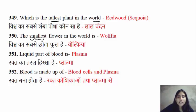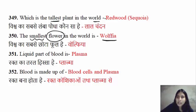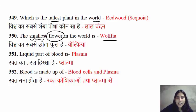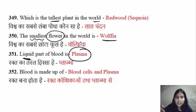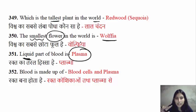The smallest flower in the world is Wolffia. Rafflesia is the biggest flower. The liquid part of blood is called plasma. Blood is made of plasma, and with plasma, blood also contains red blood cells (RBCs), white blood cells (WBCs), and platelets.